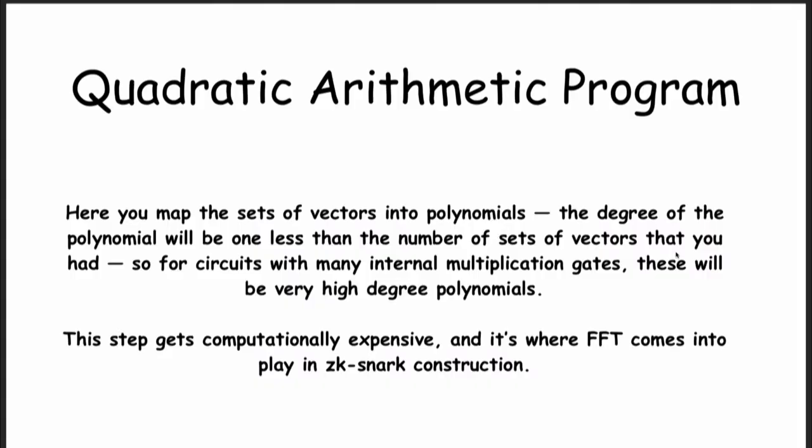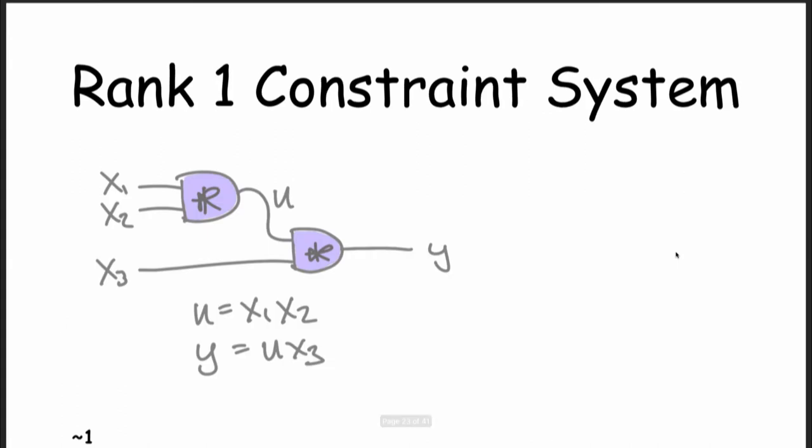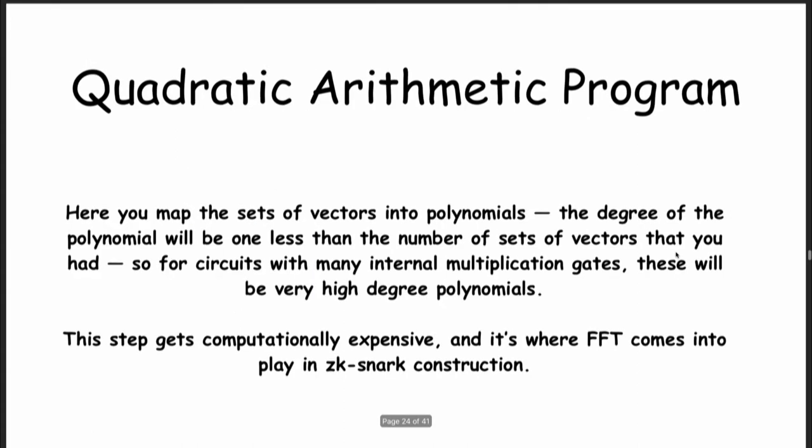This is called a quadratic arithmetic program. There's a cool result that says quadratic arithmetic programs are a very good thing to create SNARKs about. In our case the polynomials would only be degree one because we only have two gates, but if you have a lot of gates, this is a really huge saving — going from verifying every single gate to verifying one thing is extremely huge.